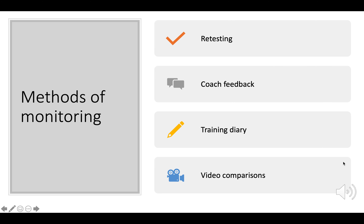Here are some examples of different methods of monitoring. At National 5 PE you need to be able to describe two methods of monitoring for two different factors. The methods we will look at are: retesting, coach feedback, training diary, and video comparisons.